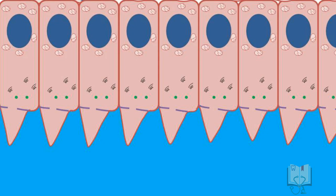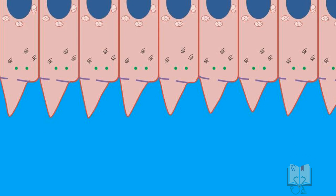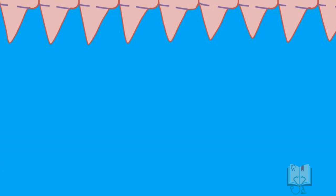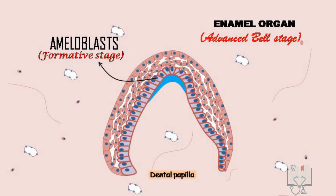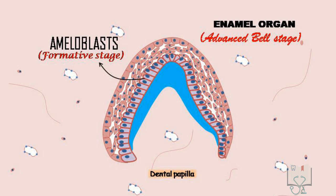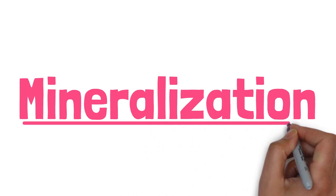As ameloblasts deposit enamel, they continuously keep moving in the opposite direction. By the end of the formative stage, the whole thickness of enamel is formed, constituting all of the organic matter. Now coming to mineralization.